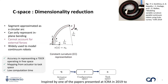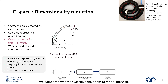Inspired by one of the papers presented at ICRA in 2019 to use Euler curves to represent long and heavy continuum robots, we wondered whether we can apply them to model these strip forces while retaining the advantages of the constant curvature representation.